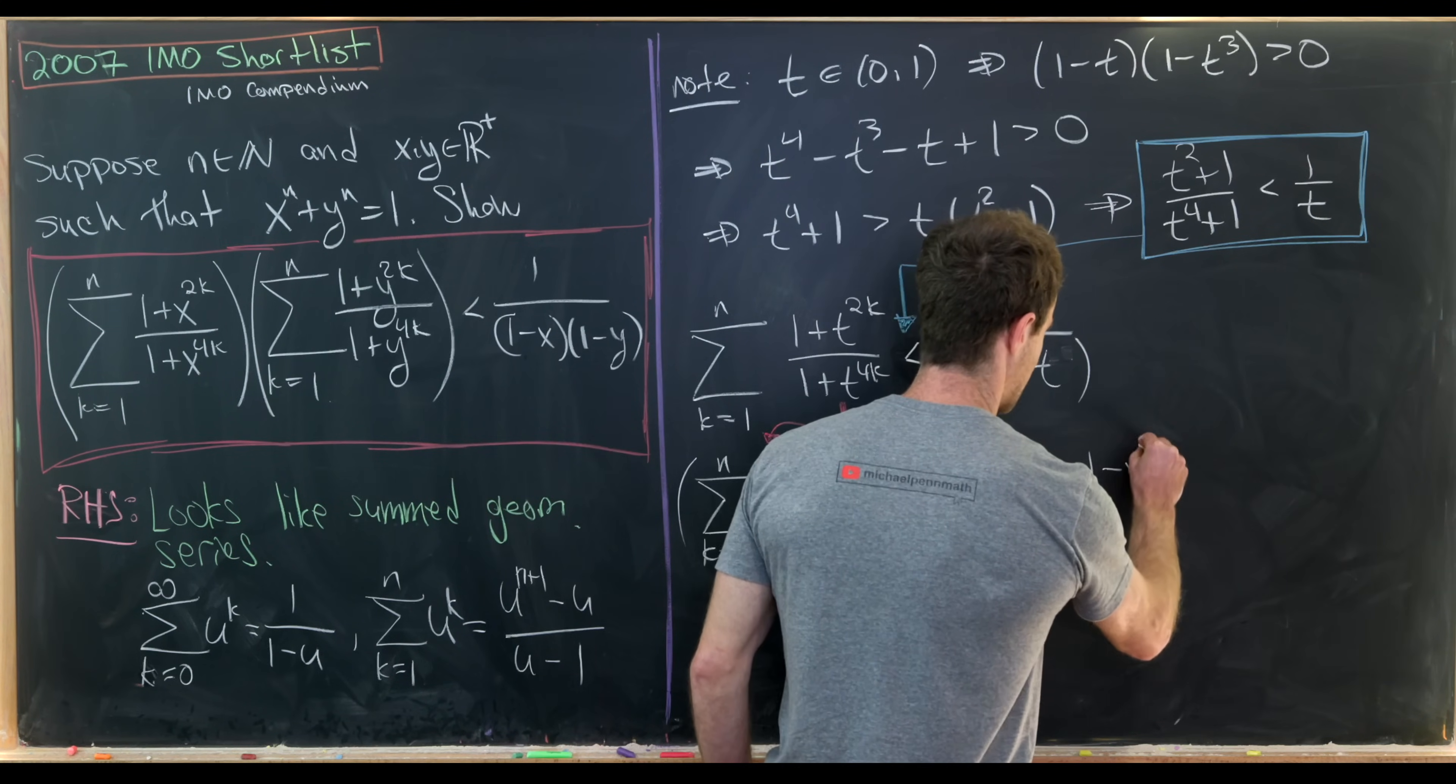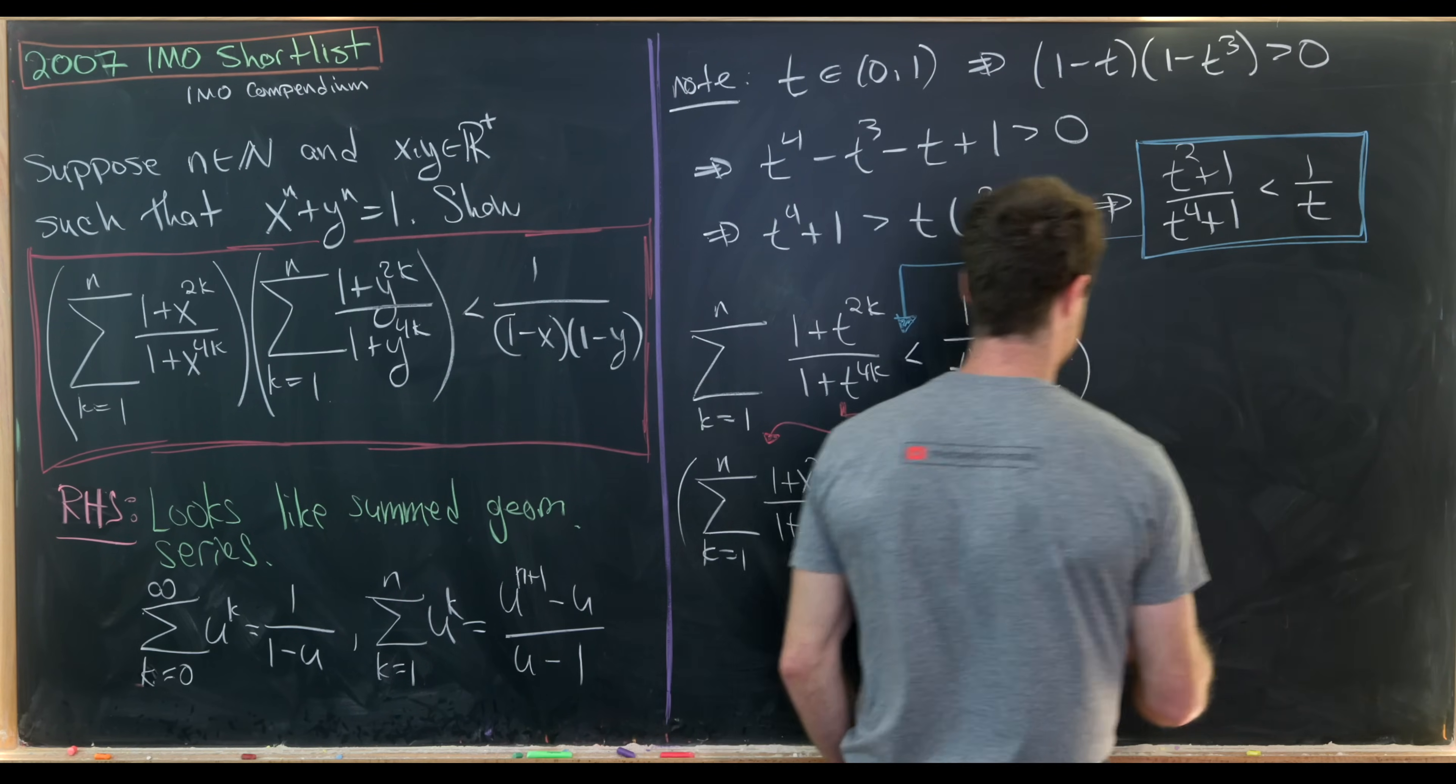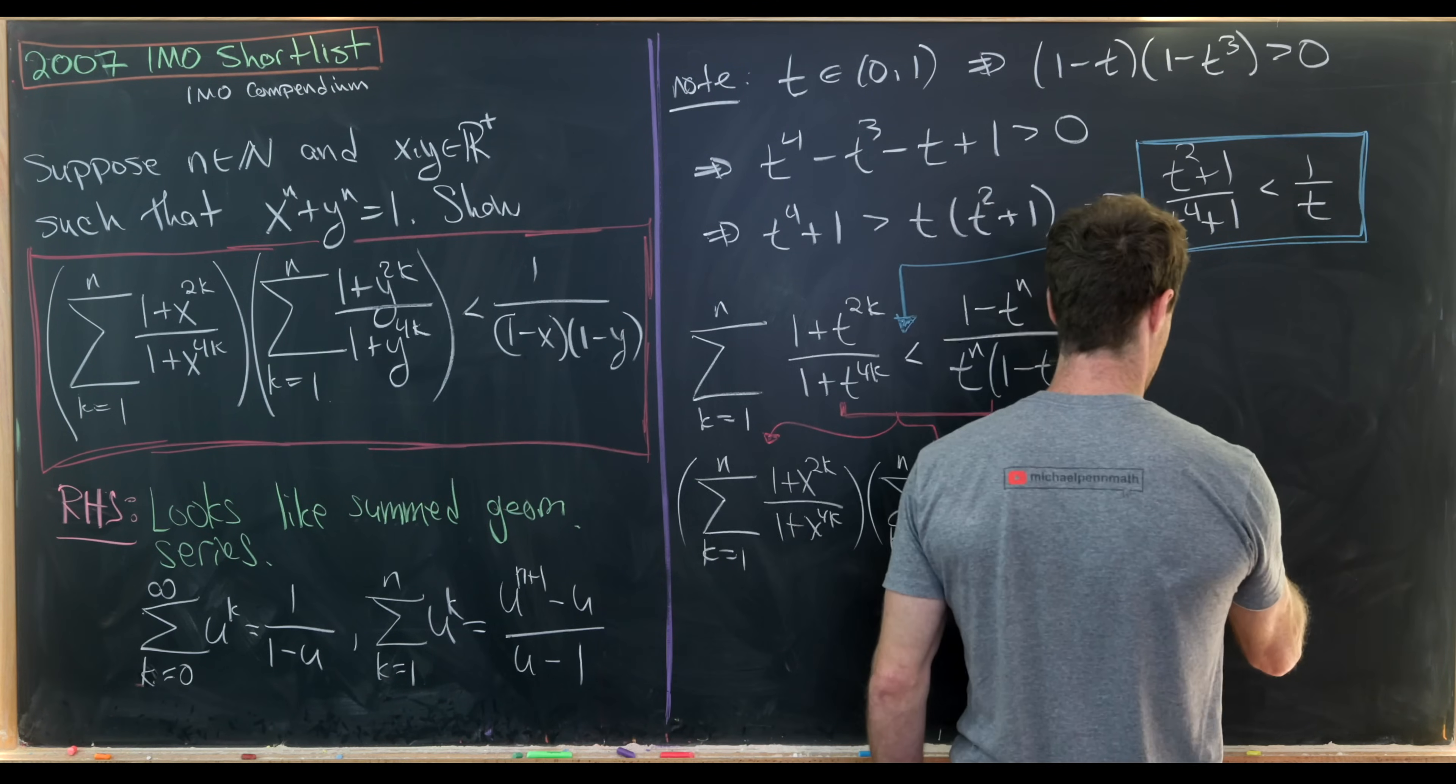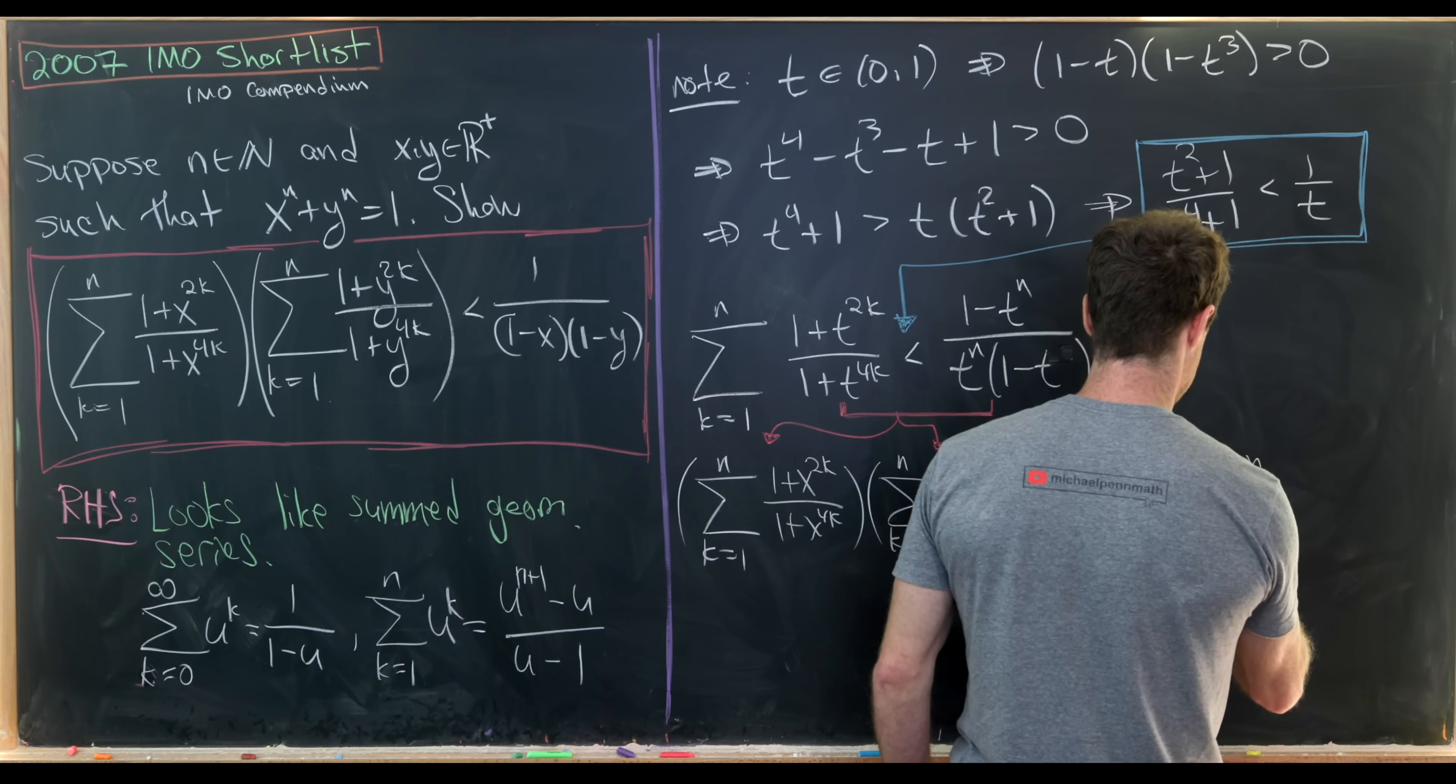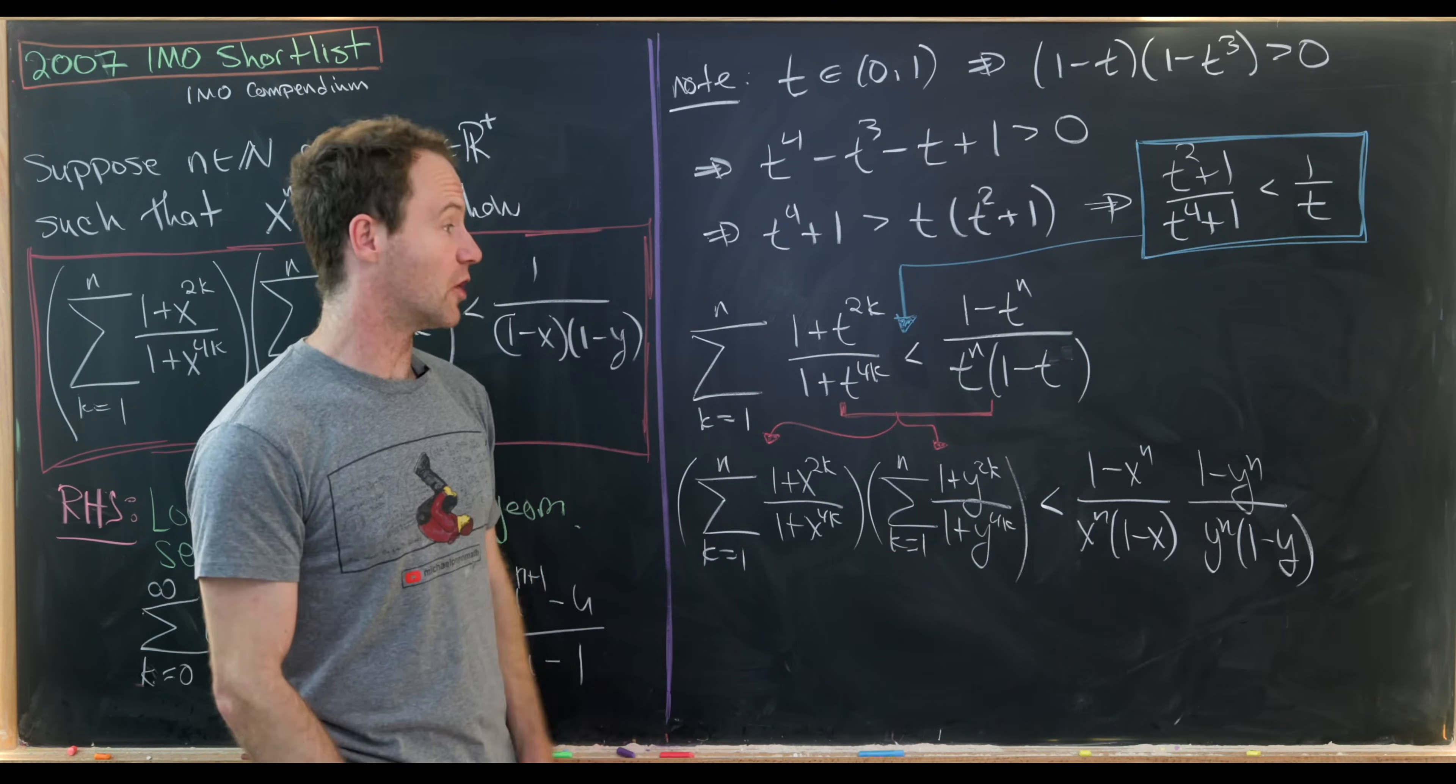So for the first, we'll have (1 minus x to the n) over (x to the n times 1 minus x). And for the second, we'll have the same thing, but x is being replaced with y. So (1 minus y to the n) over (y to the n times 1 minus y). But now we're essentially home free.